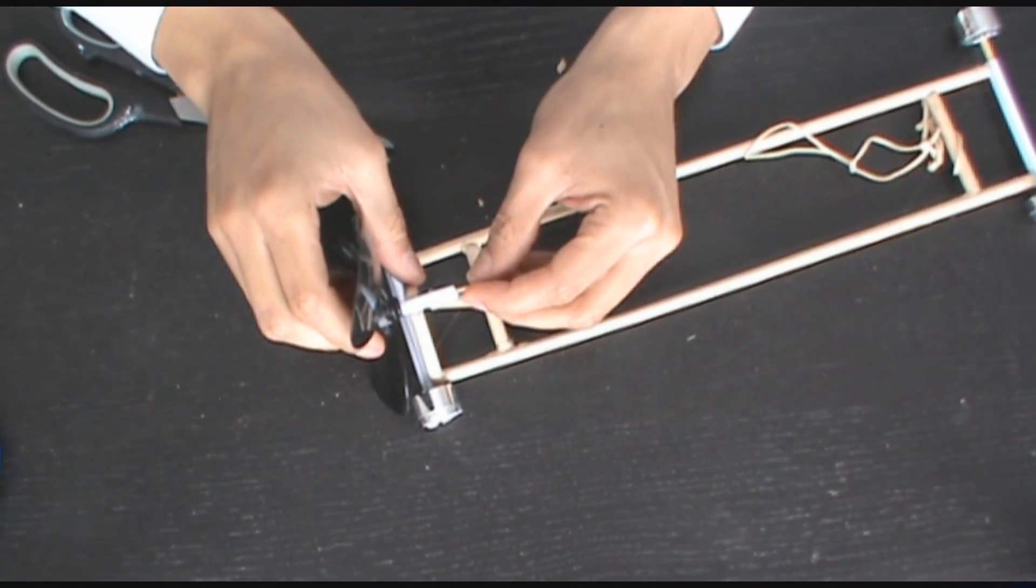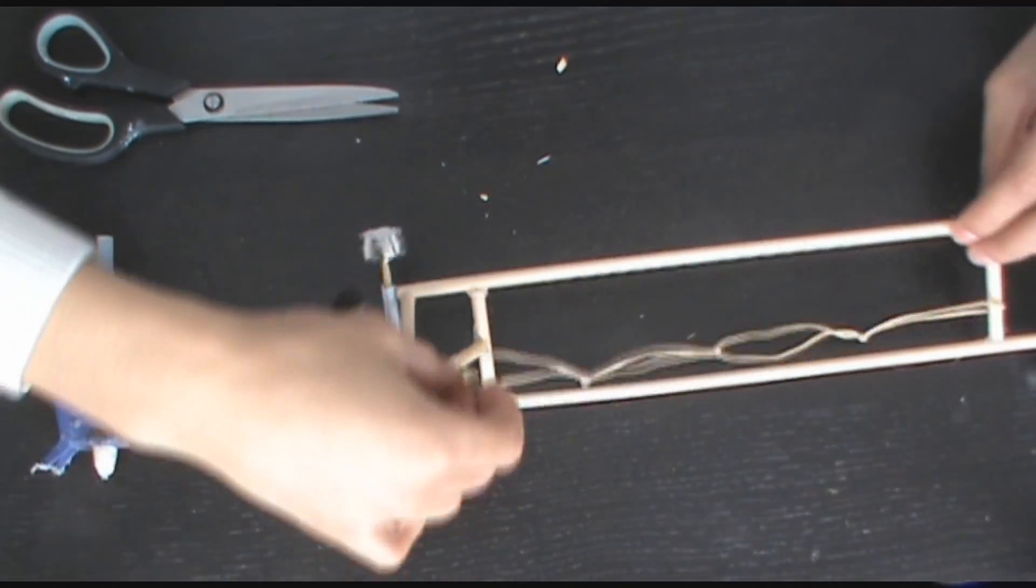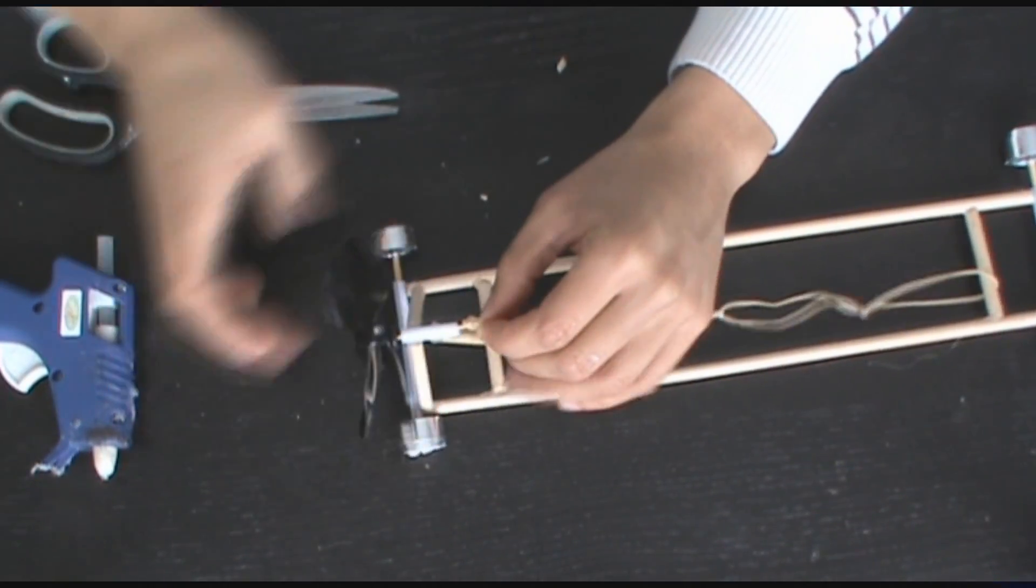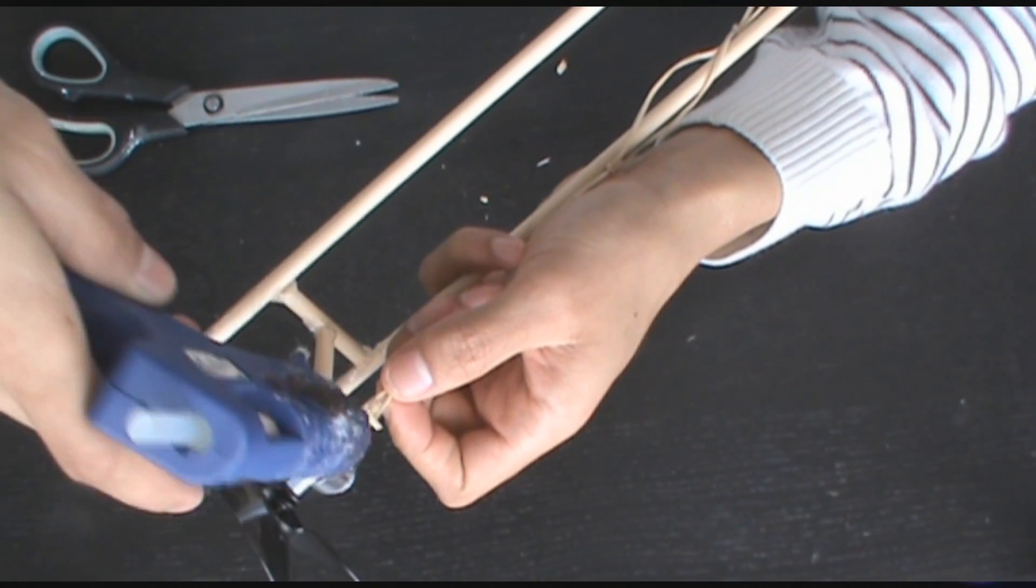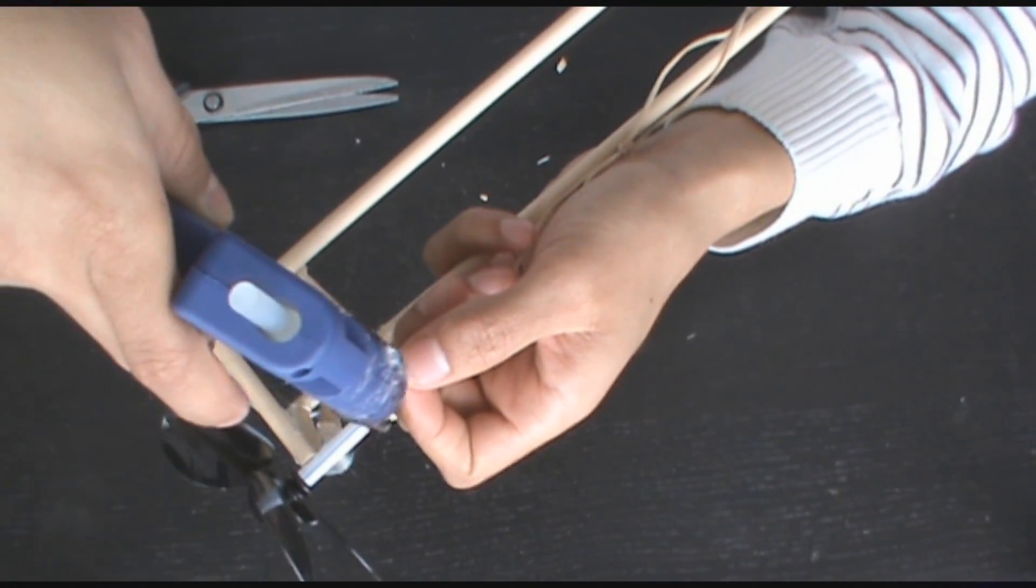So as you can see, the elastic band just goes around that second piece of toothpick I glued down and attaches to the axle that way. And then we'll just add some glue so nothing falls apart.